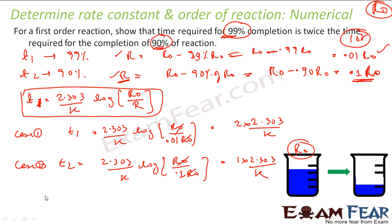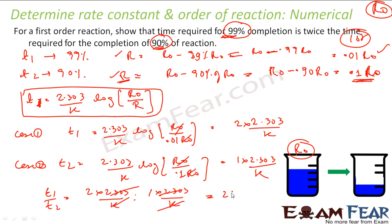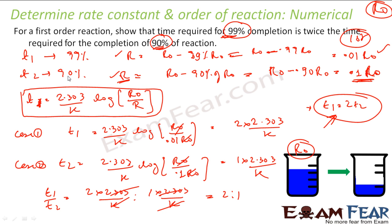Now let's find the relation between T₁ and T₂ by dividing them. T₁ / T₂ = [2 × (2.303 / K)] / [1 × (2.303 / K)]. The K and 2.303 cancel, giving T₁ / T₂ = 2 / 1, so T₁ = 2 T₂. This proves that the first-order reaction takes twice as long to complete 99% compared to 90%.